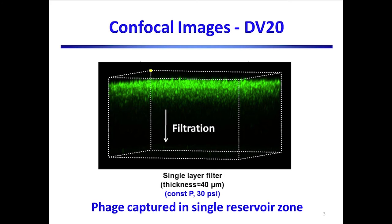Here you can see the Z-stacked image of the Asahi DV20 virus filter after it was challenged with a bacteriophage labeled with the green dye fluorescein. The phage are clearly visible in a single zone near the entrance of the DV20 filter.